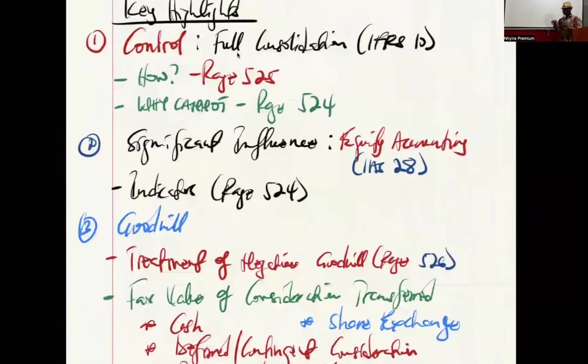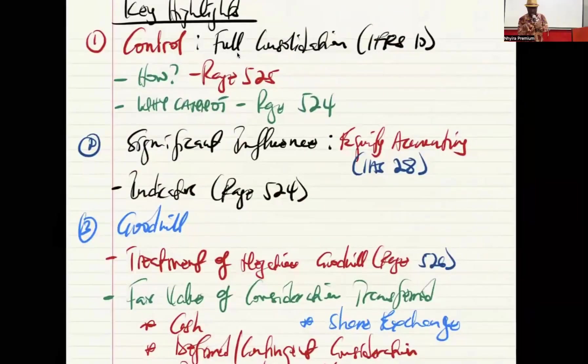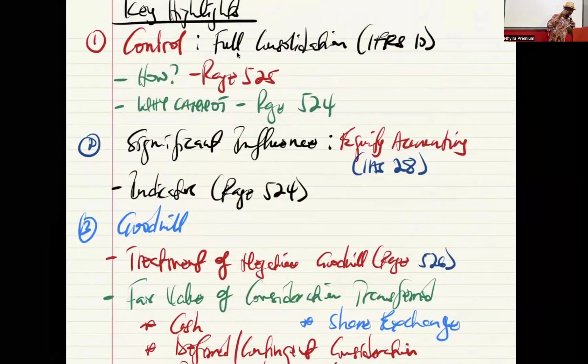So we've looked at the concept of control, how we get it, why an entity with control cannot prepare consolidated financial statements. We've looked at significant influence and the indicators of significant influence and how we apply IAS 28.